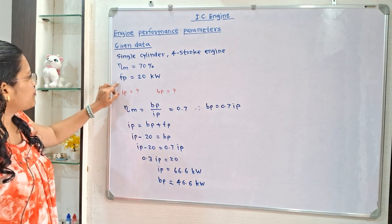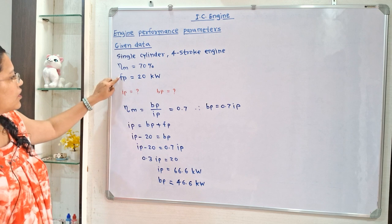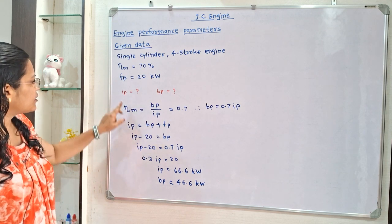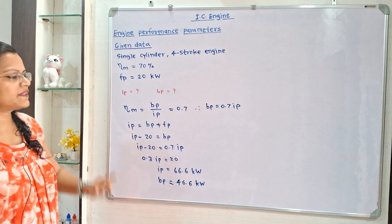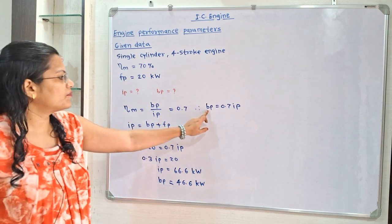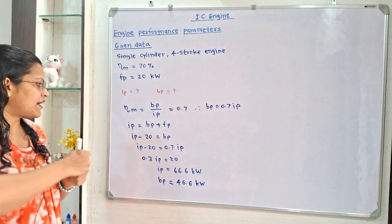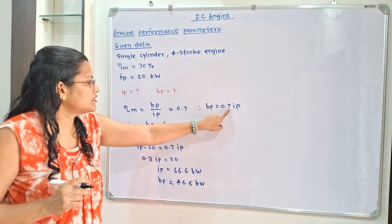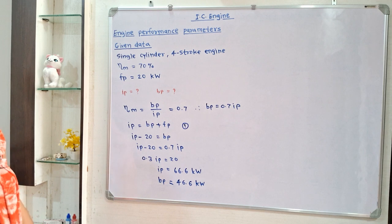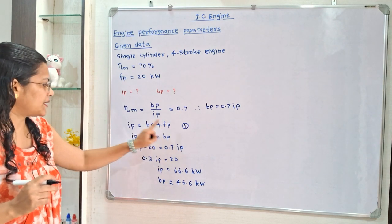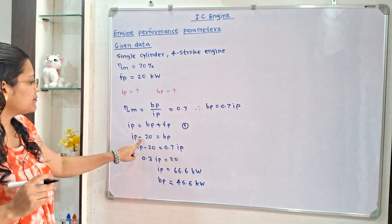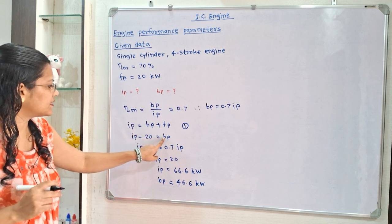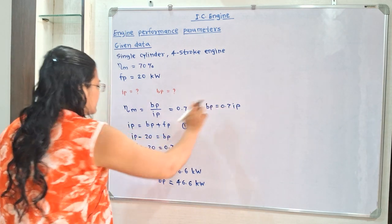Frictional power is given. The relation between indicated power, frictional power, and brake power is: indicated power equals brake power plus frictional power. Substituting the value of brake power from equation 1, we write ip equals 0.7 ip plus fp. Putting fp equal to 20, ip minus 20 equals bp, and bp equals 0.7 ip.